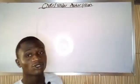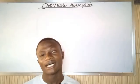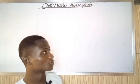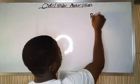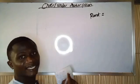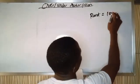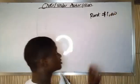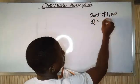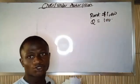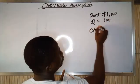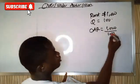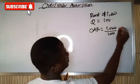In this class we'll be talking about under absorption and over absorption. Let me give you an illustration. Let's say the rent, which is my overhead to be absorbed, is $1,000, and the quantity I produced is 100. In this situation, my overhead absorption rate equals $1,000 divided by 100, which gives me $10 per unit.